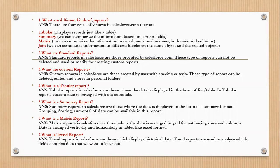What are the different kinds of reports? There are four types of reports in Salesforce: Tabular, which displays records just like a table; Summary, where we can summarize the information based on certain fields or metrics; Matrix, where we can summarize the information into rows and columns; and Joint, where we can summarize information in different blocks on the same object and related objects.